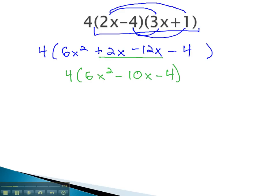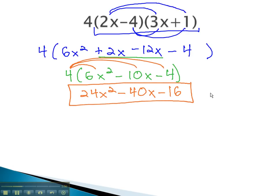Now that we have multiplied the binomials together, we can distribute the monomial out front through the parentheses. 4 times 6x squared is 24x squared. 4 times negative 10x is negative 40x. 4 times negative 4 is negative 16. This becomes our final product when we multiply the monomial times the binomials.